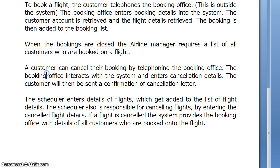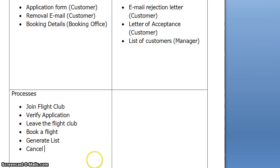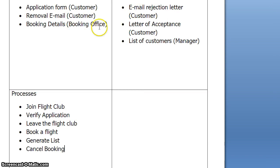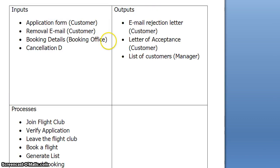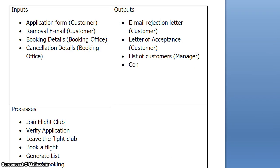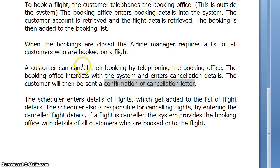A customer can cancel their booking — we can spot there a doing word, so it's a process: cancel booking. To do so, they telephone the booking office. The booking office interacts with the system and enters cancellation details, so therefore that is an input from the booking office. The customer will then be sent a confirmation cancellation letter, so that is an output to the customer. And the process taking place: cancel booking.